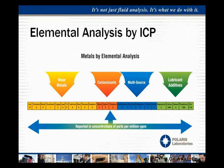Now we're going to talk specifically about what these different tests are. For elemental analysis, we use an inductively coupled plasma spectrometer, which gives us a range of 24 different metal elements. As you can see in this chart, iron, chrome, nickel, aluminum, all the way over to vanadium are typically considered wear metals. Then we have three elements — silicon, sodium, and potassium — that are typically contaminants.